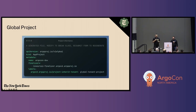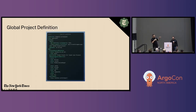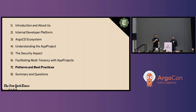Speaking about inheritance, the global project is a parent for every project of our tenants. In our global project, we put limitations on the resources that can be deployed. We have just one cluster-level resource available for tenants and a quite long list of namespaced resources. We also limit the source repos so we can deploy only applications from our GitHub organization.